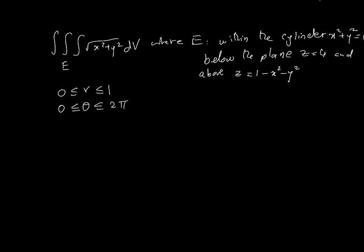What's happening is our z values are essentially going from above. On the top we have z = 4, and at the bottom we have this paraboloid 1 - x² - y². So this will become z = 1 - r². And the other one is z = 4.